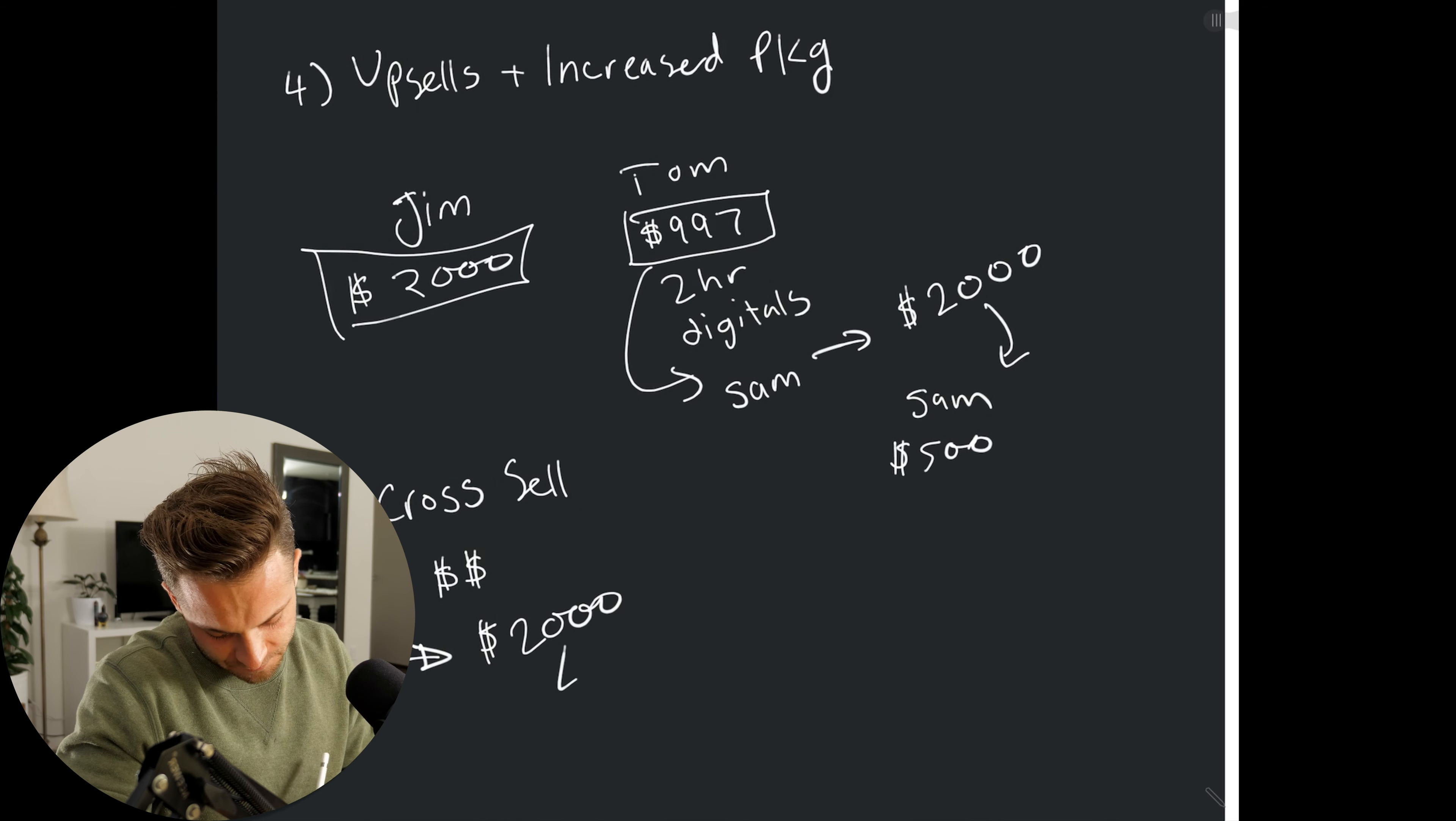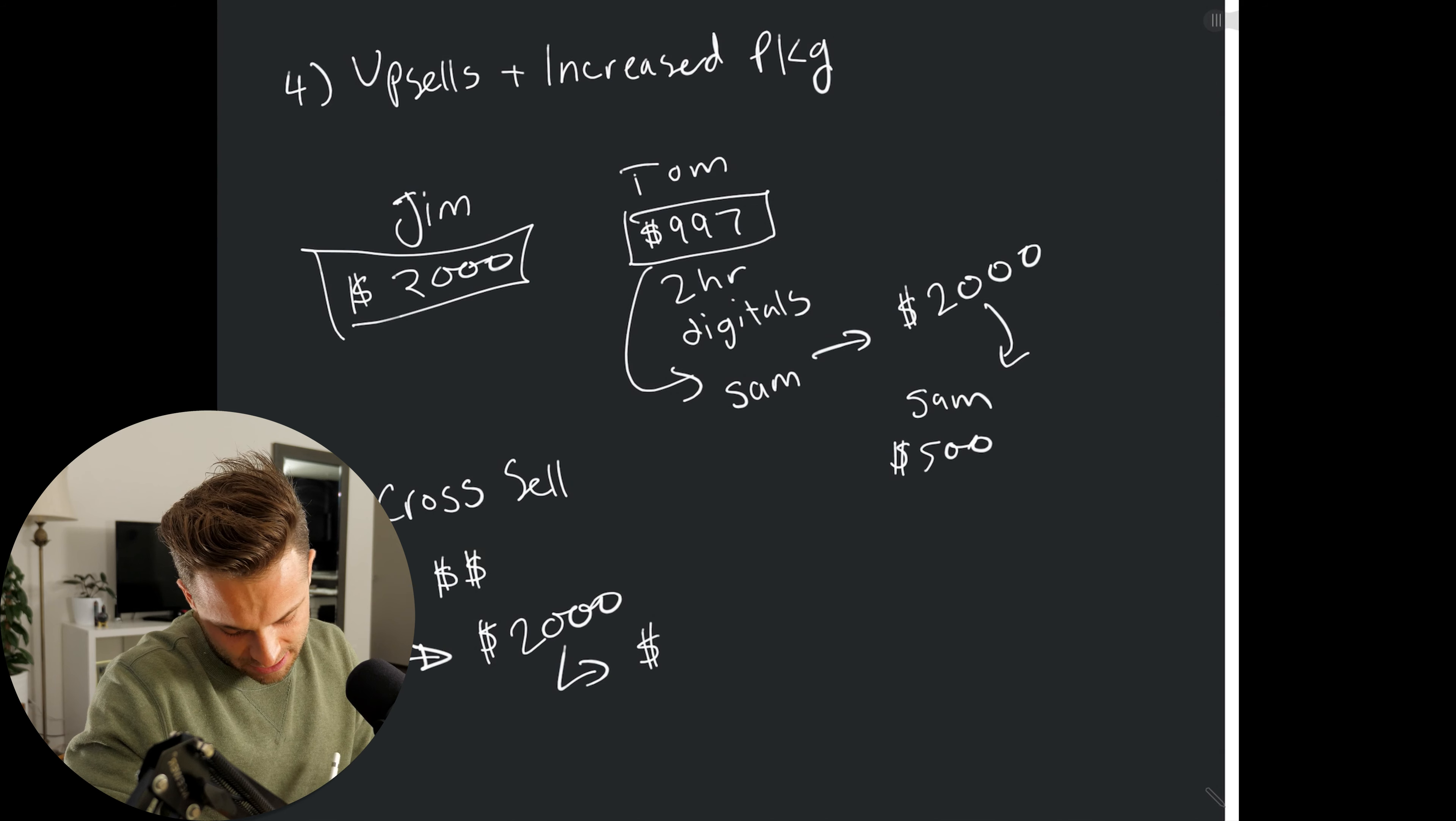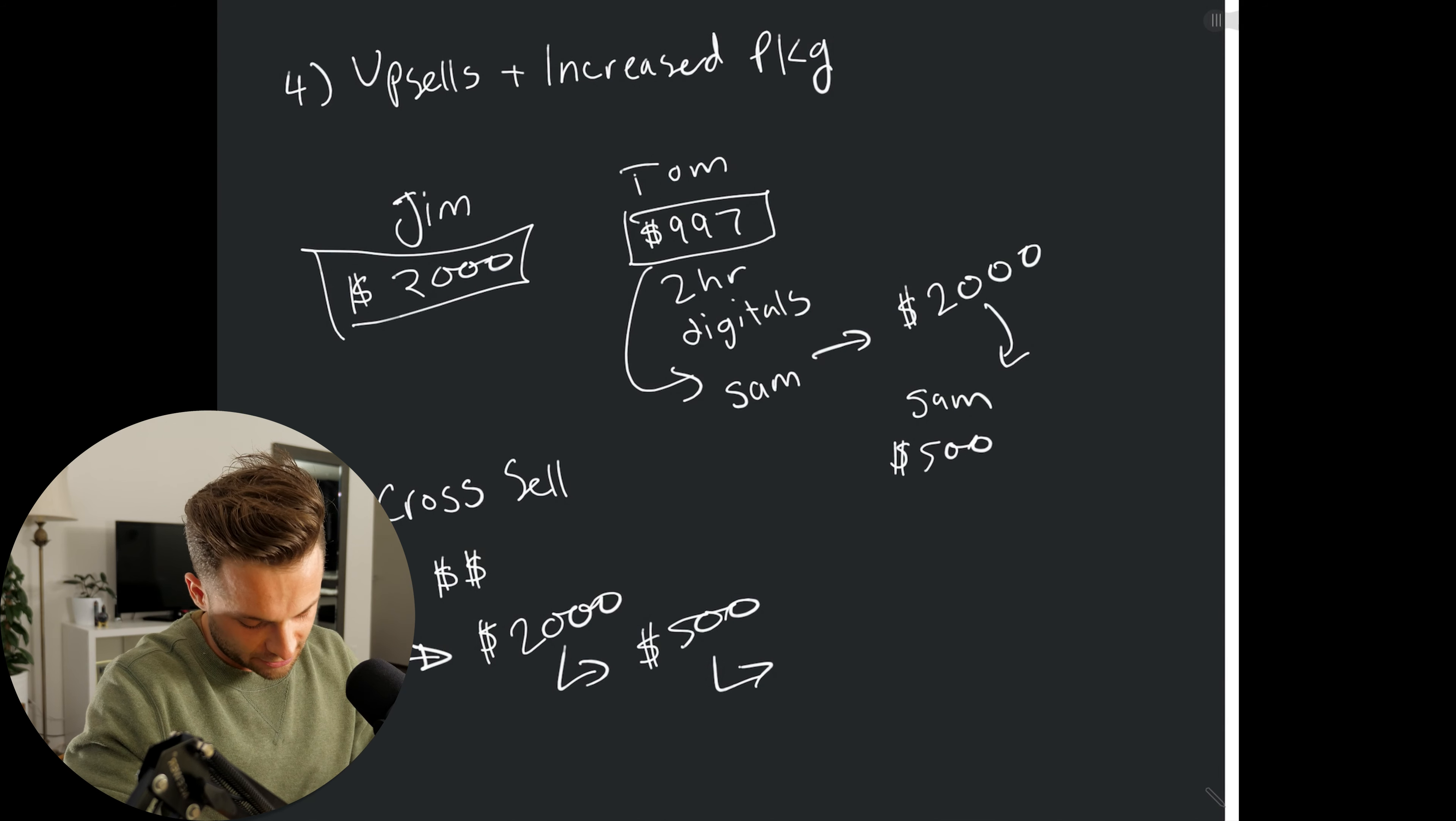So now Tom has made an extra $2,000, and then later he might sell a family shoot, and that's an extra $500, right? So we can cross-sell all day long to increase our LTV.